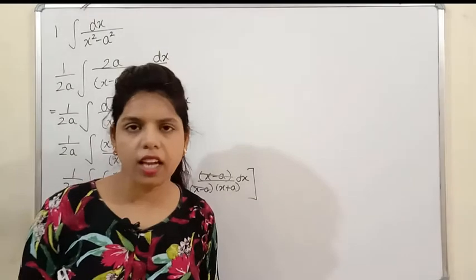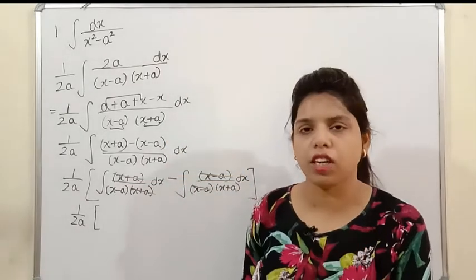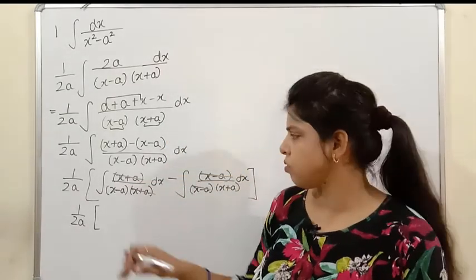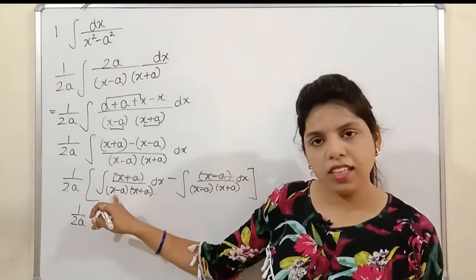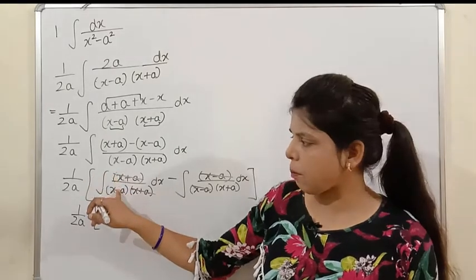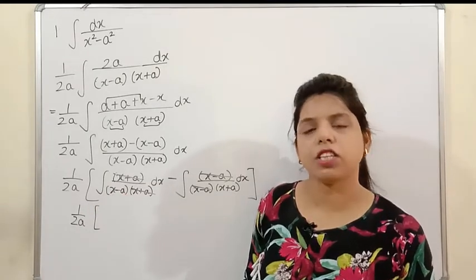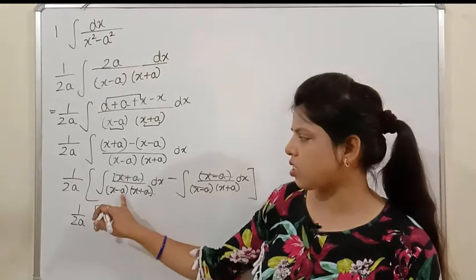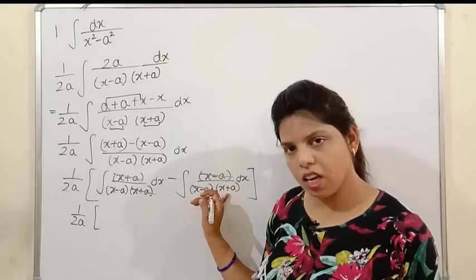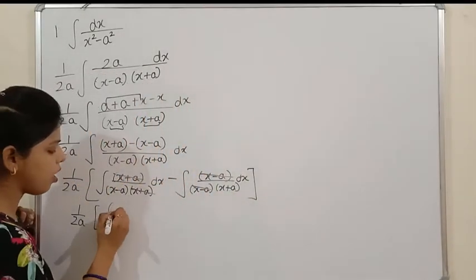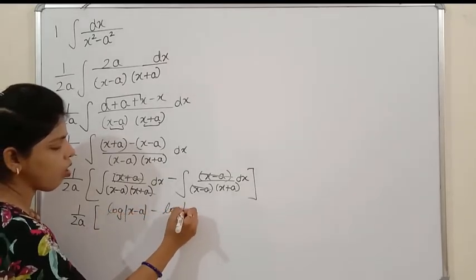What remains is 1/(x-a) and 1/(x+a). Remember: log x applies when the function below is linear — that is, x has degree 1. Just as ∫(1/x) = log x and ∫(1/(x+2)) = log(x+2), here ∫(1/(x-a)) = log(x-a) and ∫(1/(x+a)) = log(x+a). So we write down log(x-a) and log(x+a).